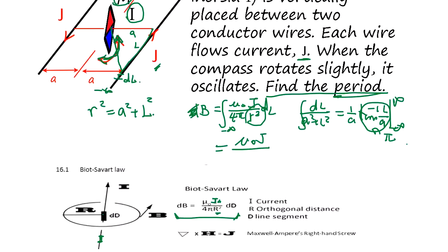The pi cancels out, giving us B. But we have two wires on both sides, so the total field is 2B. Now when you move the angle theta, it's going to rotate.